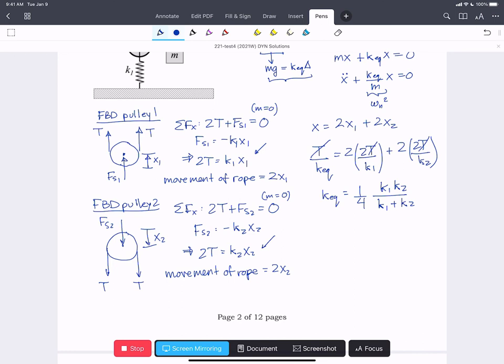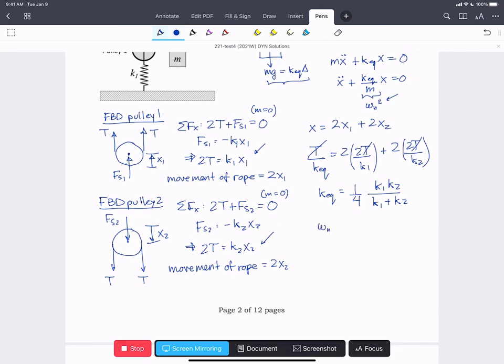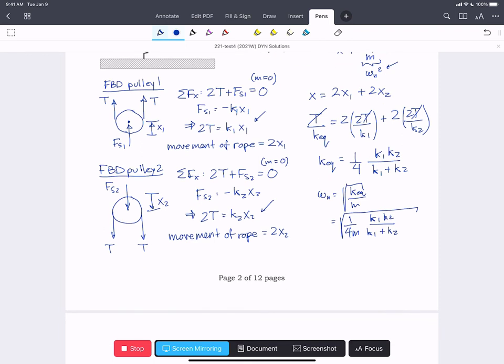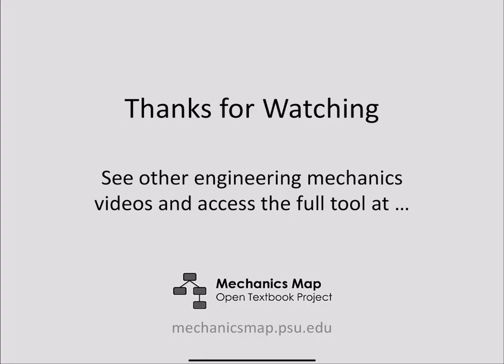So we can see from our characteristic equation up here that omega n is going to be the square root of k equivalent over m, which is the square root of one over four m k one k two over k one plus k two. And if we stick our numbers in there, we find that omega n equals 2.31 radians per second. Thanks for watching this video. Find more videos and material at MechanicsMap.